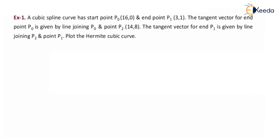First example: a cubic spline curve has starting point P0 at (16, 0) and end point P1 at (3, 1). The tangent vector from end point P0 is given by the line joining P0 and P2 at (14, 8). The tangent vector for end point P1 is given by the line joining P2 and P1. Plot the Hermite cubic curve.